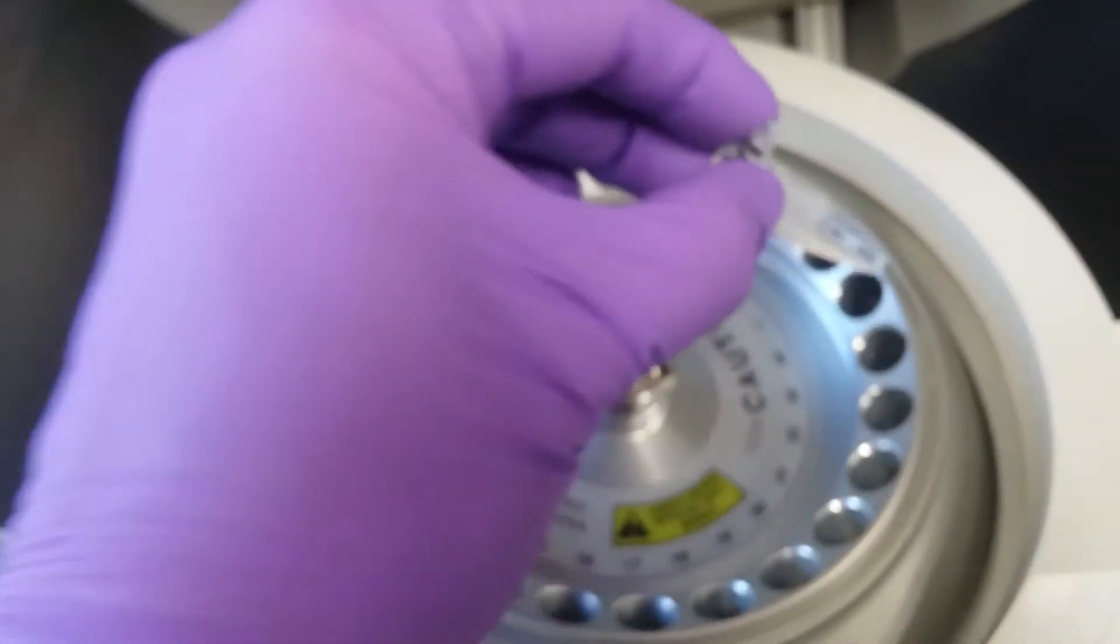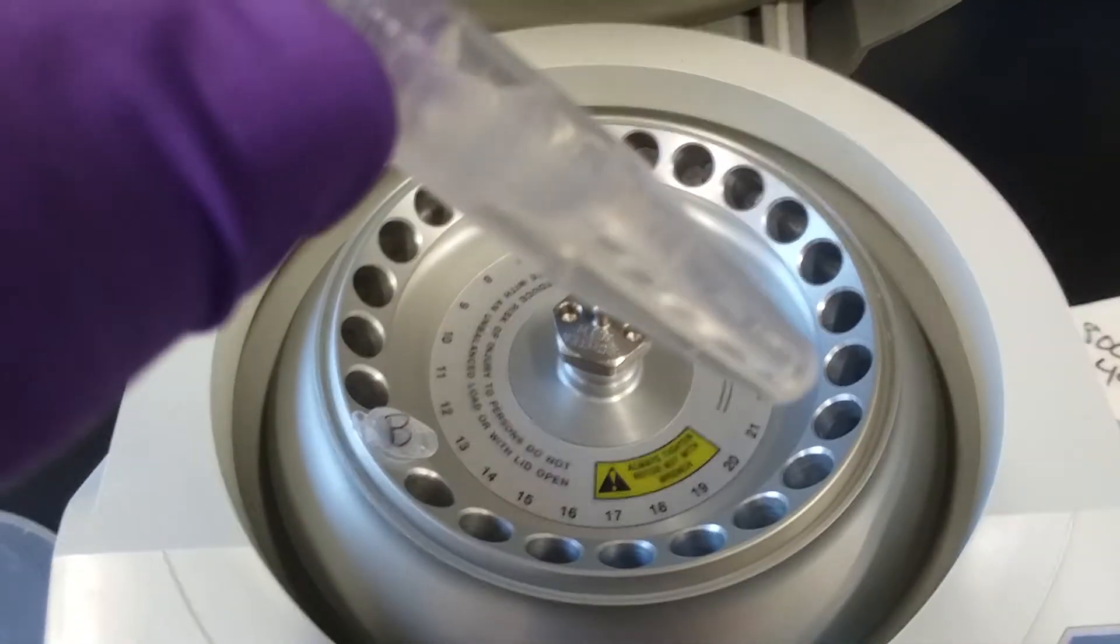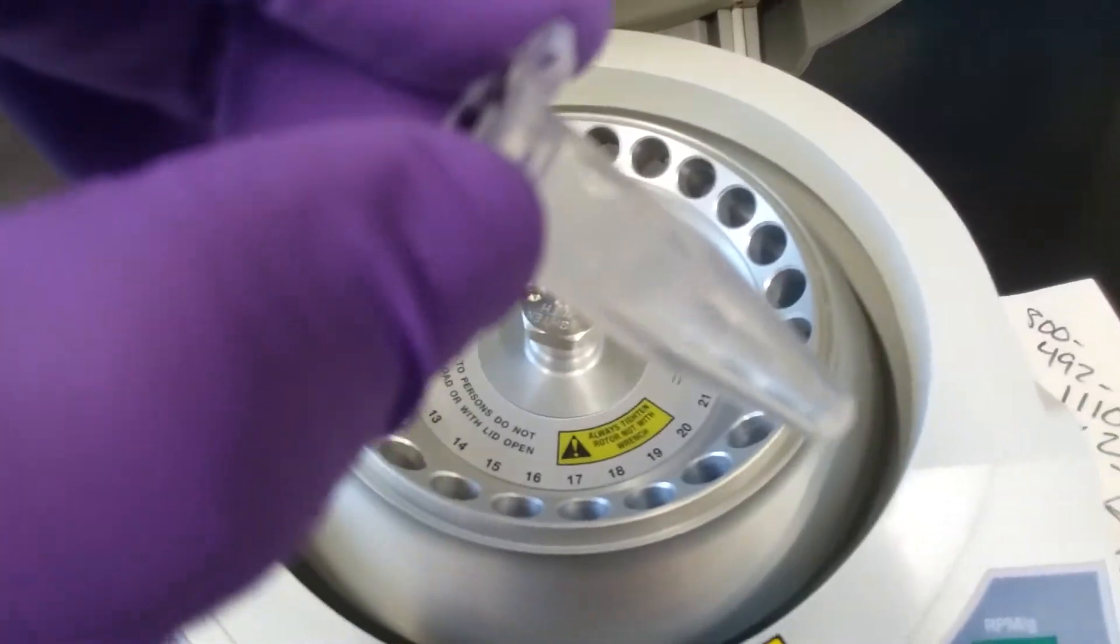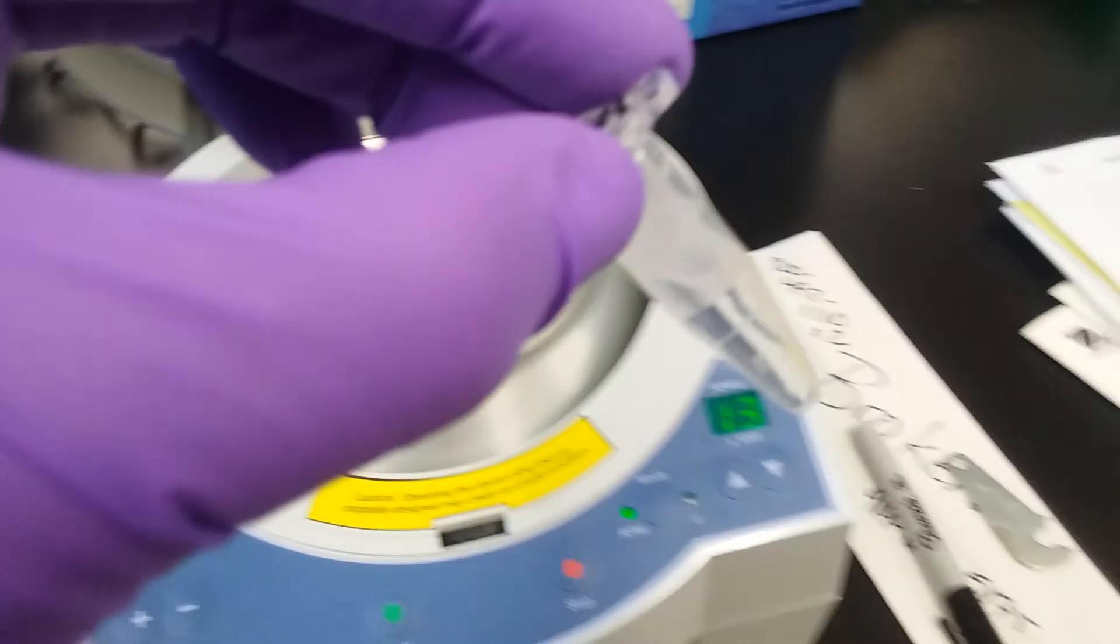And now my spin is done, and you'll either see a pellet, which I'm not seeing, but it would be on that side of the tube, and that's the stuff we don't want.